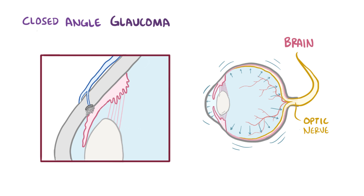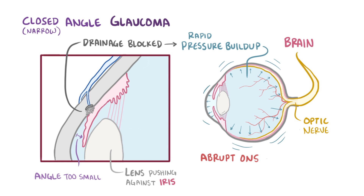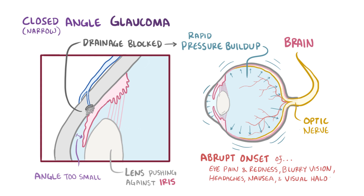Another type of glaucoma is closed-angle glaucoma, also known as angle closure glaucoma or narrow angle glaucoma, and this is due to the angle between the iris and the cornea being too small, meaning that the passageway for aqueous humor outflow is too narrow, and this is as a result of the lens being pushed against the iris. The result is that the drainage system gets blocked, but this time causes a rapid buildup of pressure within the eye, which can cause abrupt onset of severe eye pain, eye redness, blurry vision, headaches, nausea, and visual halos.